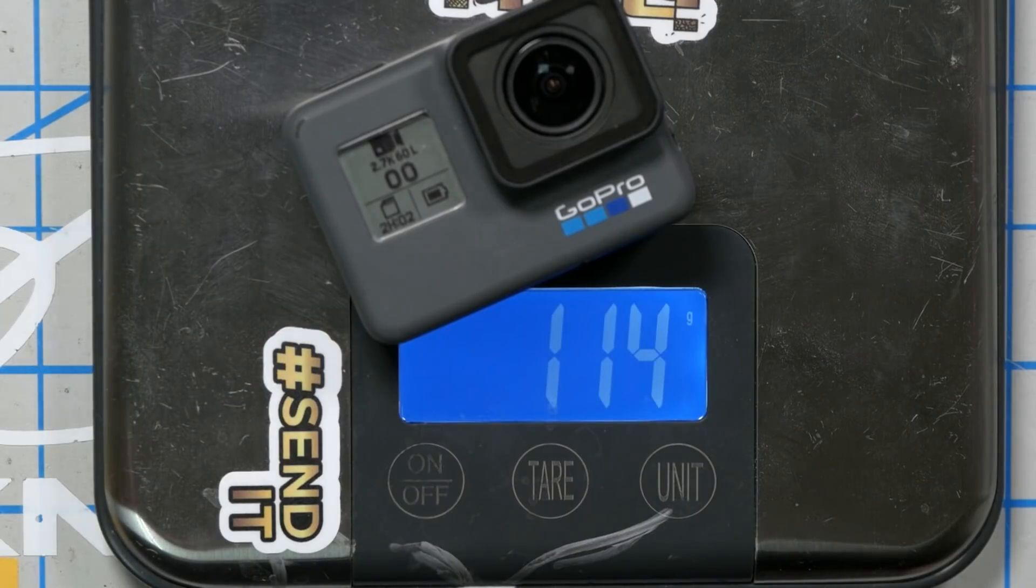This GoPro Hero 6 weighs 114 grams, and that's lighter than the newest Hero 7, 8, and 9, but it's still not as light as it could be.